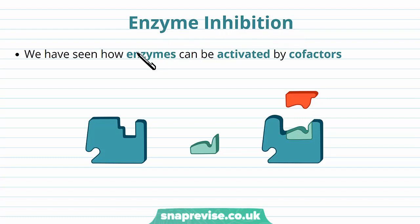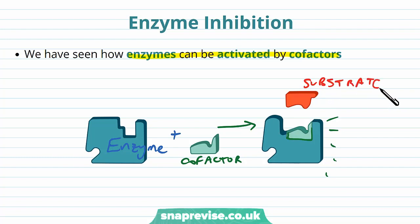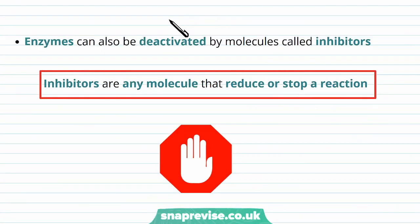Enzymes can be activated by various different cofactors — important molecules that bind to the enzyme and help its function. Often the cofactor is needed to complete the enzyme structure or aid it in functioning, making it better. Then the substrate can bind and the reaction can proceed appropriately. But other molecules can bind to enzymes too, and they can be deactivated by molecules known as inhibitors — any molecule which reduces or stops a reaction from happening, essentially a blockade.